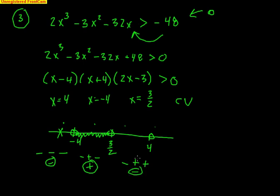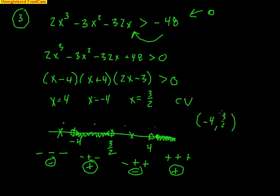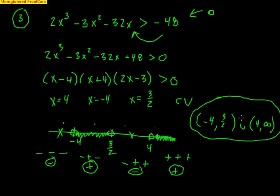Numbers greater than 4 — pick 10. Ten minus 4 is positive; 10 plus 4 is positive; 2 times 10 minus 3 is still positive. Three positives make a positive, so I like numbers greater than 4. There are two intervals that work: any number from negative 4 to 3/2 — non-inclusive because I can't equal 0 — and then any number from 4 towards infinity. These two intervals joined with a union symbol represent all solutions to the nonlinear inequality.